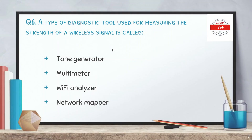Question 6: a type of diagnostic tool used for measuring the strength of a wireless signal is called — options are tone generator, multimeter, Wi-Fi analyzer, and network mapper. The correct answer is Wi-Fi analyzer.